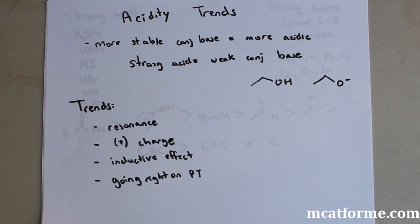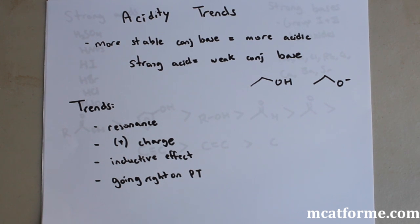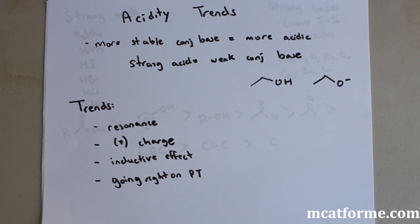Now we're going to look at trends in acidity. All the trends listed here are ones that will increase the acidity — that way it'll be easier to memorize. First, if a molecule has resonance in terms of its conjugate base, that will increase the acidity of the molecule.